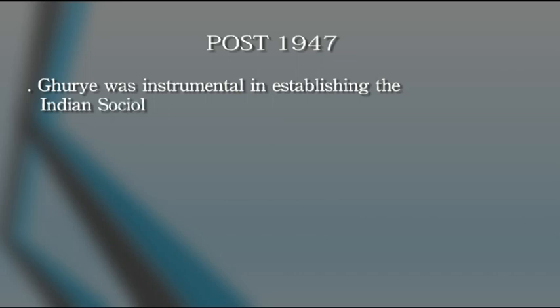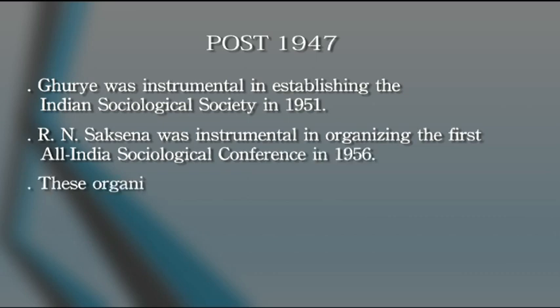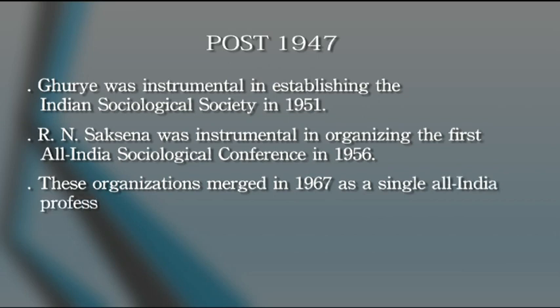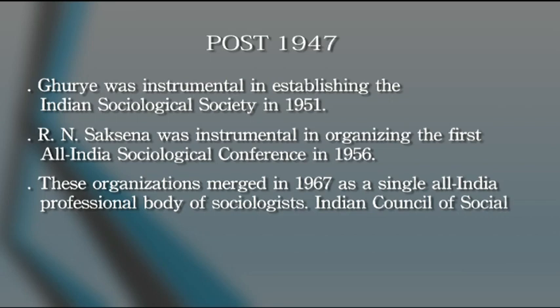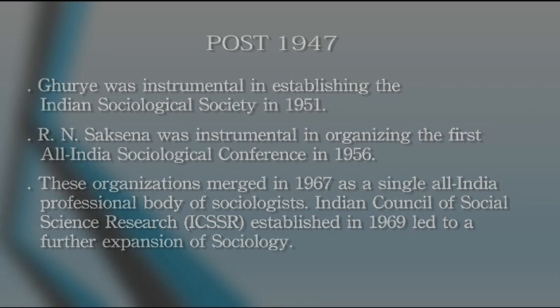Post-1947, after independence, there was further growth in the professionalization of sociology. G.S. Ghurye was the first to start the Indian Sociological Society in 1951. R.N. Saxena organized the first All India Sociological Conference in 1956. These organizations merged together and established the Indian Council for Social Science Research — ICSSR — in 1969. M.N. Srinivas was also hugely influential in starting the first departments of sociology at Delhi University.